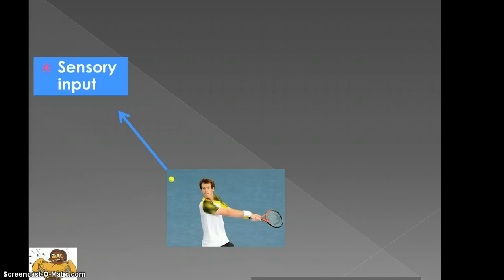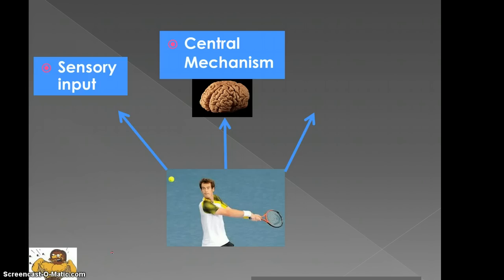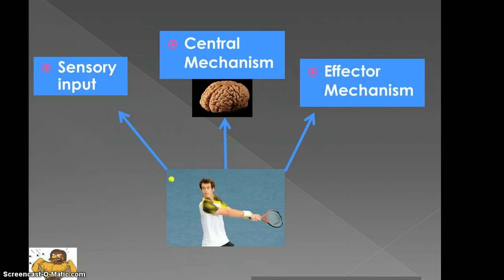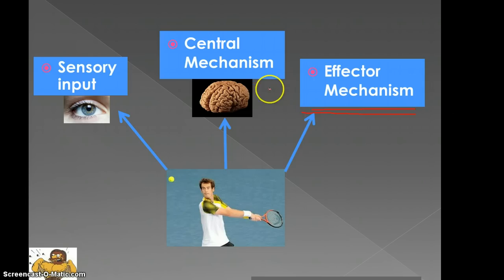We start out with the sensory input, followed by the central mechanisms, and then finally the effector mechanisms. The sensory input involves our senses — this could be our sight, hearing, kinesthesis, and lots of different things. We also have the central mechanism where the information is processed and may be translated into a different code, which is then sent to the effector mechanisms — the final section where messages are sent to the relevant muscle groups and an action is actually carried out. This aspect is the thinking and decision-making process, and this one here is receiving information that allows us to choose which option we actually want.